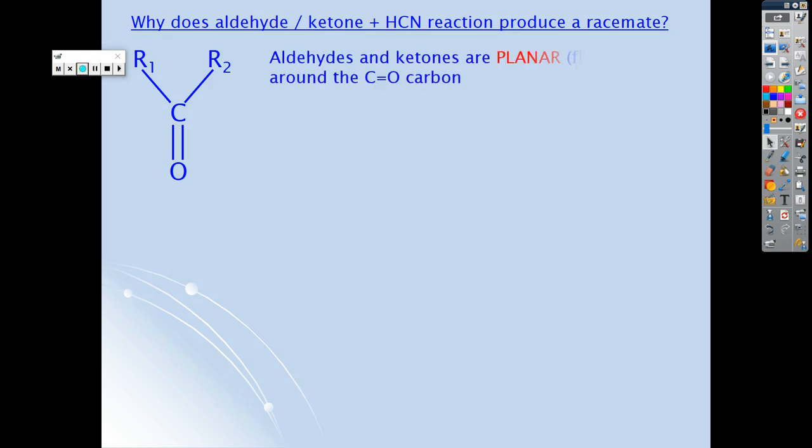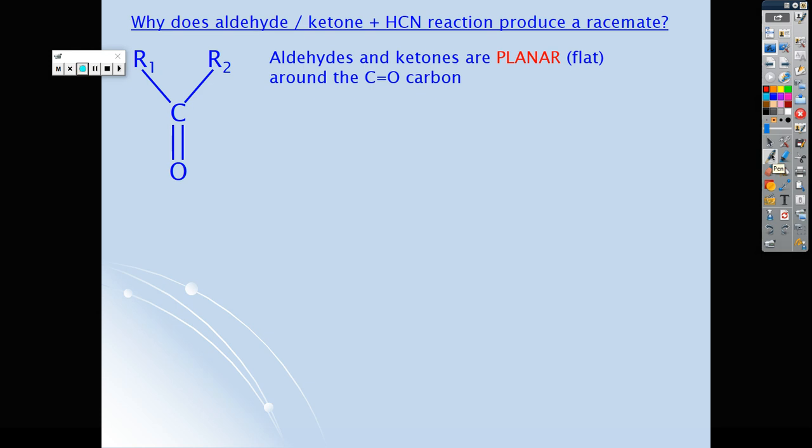Let's have a look. The reason we get this racemic mixture is because all aldehydes and ketones around the functional group are trigonal planar. If you apply your valence shell electron pair repulsion theory from AS2 chemistry, you'll see that this is a trigonal planar molecule. So what is the chances of my cyanide ion attacking from above the plane or attacking from below the plane in the first step of the mechanism? Of course, they're 50:50—from the front or the back, above and below. There is an equal chance of that happening.